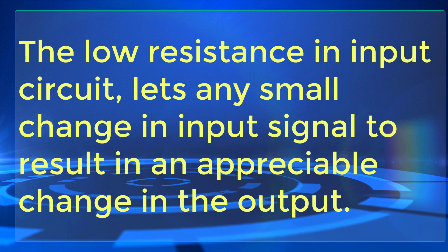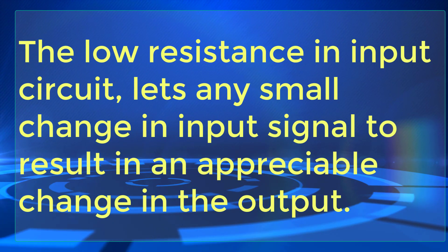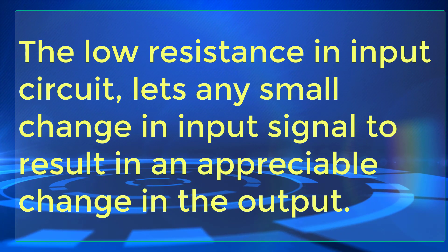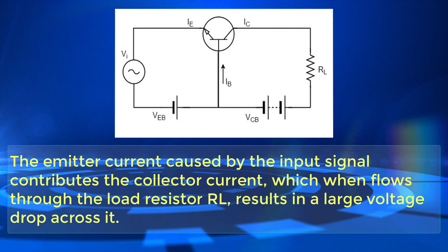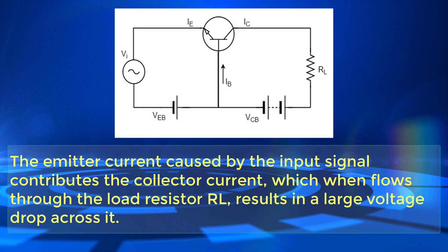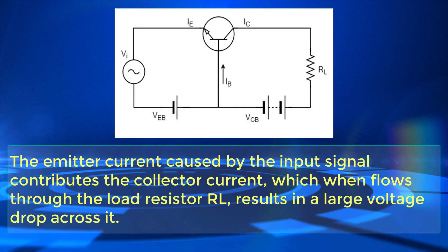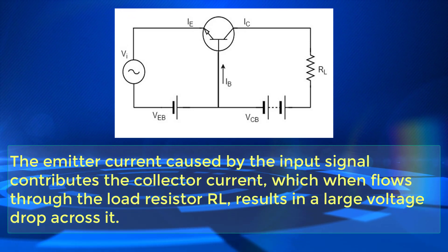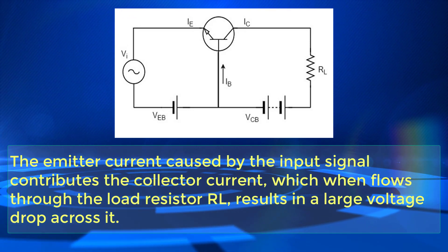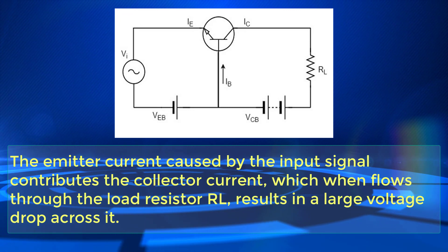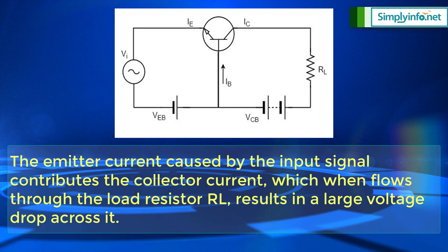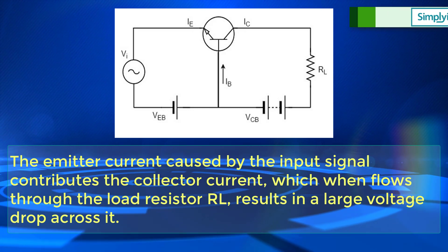The low resistance in the input circuit lets any small change in input signal result in an appreciable change in the output. The emitter current caused by the input signal contributes to the collector current, which when it flows through the load resistor RL results in a large voltage drop across it. Thus a small input voltage results in a large output voltage, which shows that the transistor works as an amplifier.